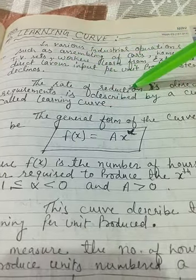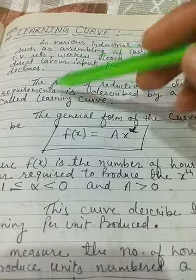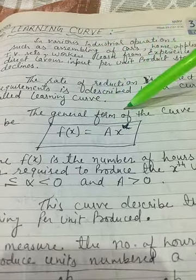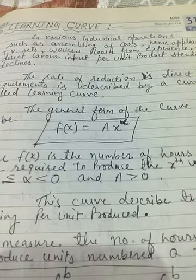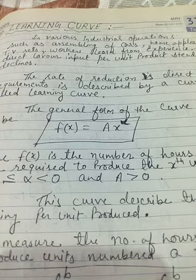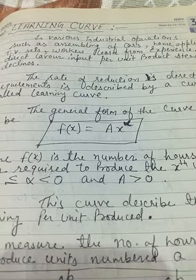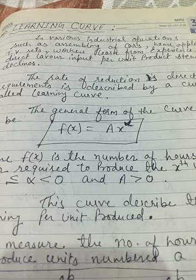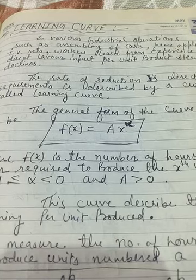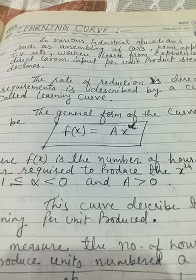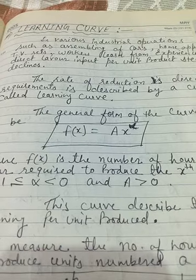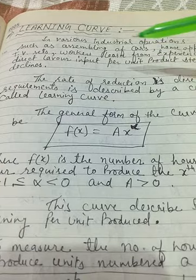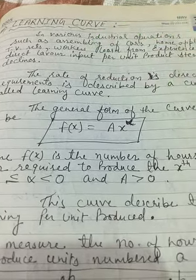The rate of reduction in direct labor requirement is described by the learning curve. For example, initially 50 laborers may be required for a production task, but after gaining experience, we find that 40 laborers can complete that task. With more time, we find that 30 or 35 laborers suffice. So this rate of reduction in the direct labor requirement is described by the learning curve.